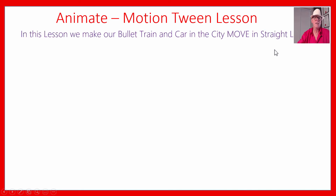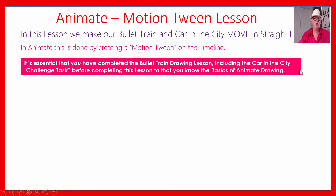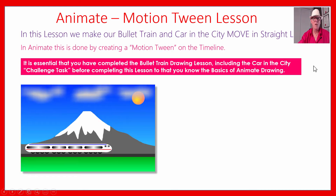We're going to be making a motion tween on the timeline. The new thing we're learning here is motion tween — we learned how to draw things, and now we're going to learn how to make them move. The simplest movement is in a straight line, so it's pretty essential. You've done the bullet train drawing lesson, including that car-in-the-city challenge task, so you've got the drawings already made. We'll be making the bullet train first, then show you a live demo in Adobe Animate.